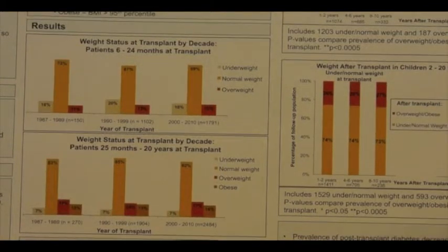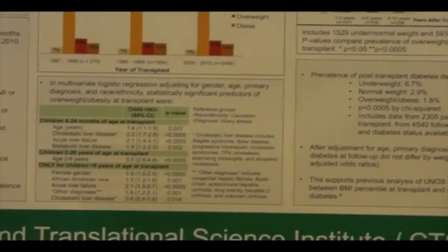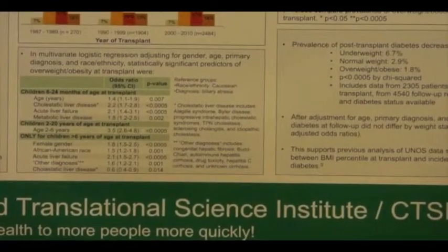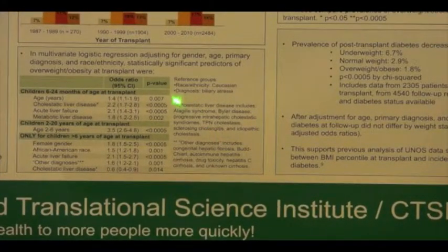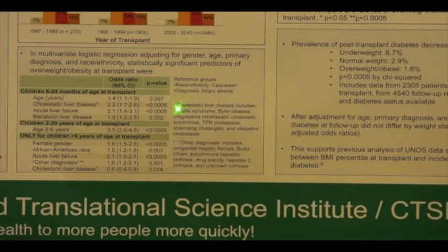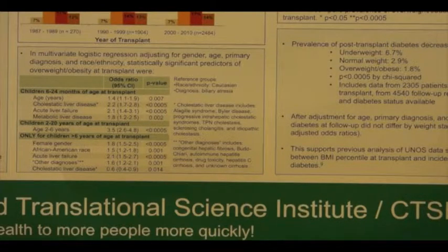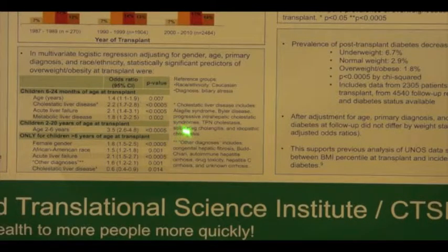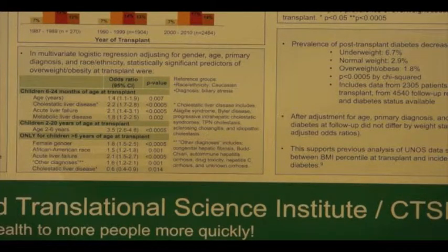We next examined which demographic factors were important predictors of being overweight or obese before transplant. Among children 6 to 24 months of age, being older within this age group or being transplanted for cholestatic liver disease, acute liver failure, or metabolic liver disease were associated with increased risk of being overweight at transplant. Among children 2 to 20 years at transplant, the strongest predictor of being overweight or obese at transplant was being 2 to 6 years old compared to those older than 6 years.